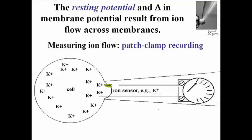Let's look at the patch clamp recording technique for measuring ion flow. Inside a micropipette that you can actually see in the photograph in the upper right of the patch clamp device, there is a solution that can detect the presence of ions.